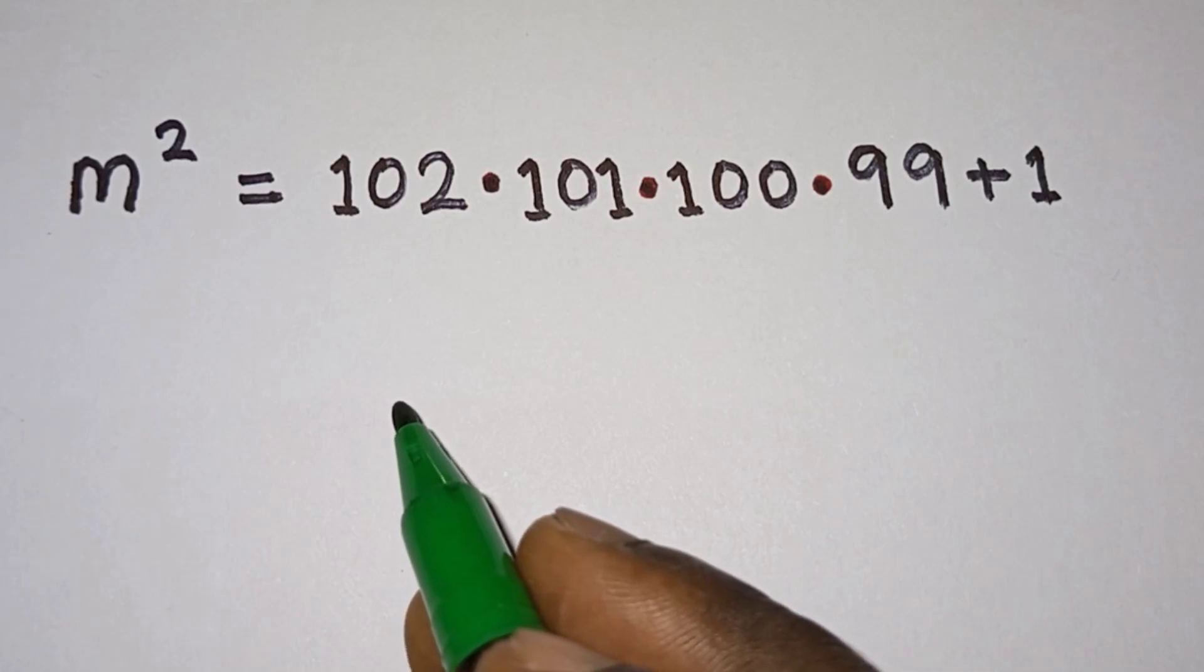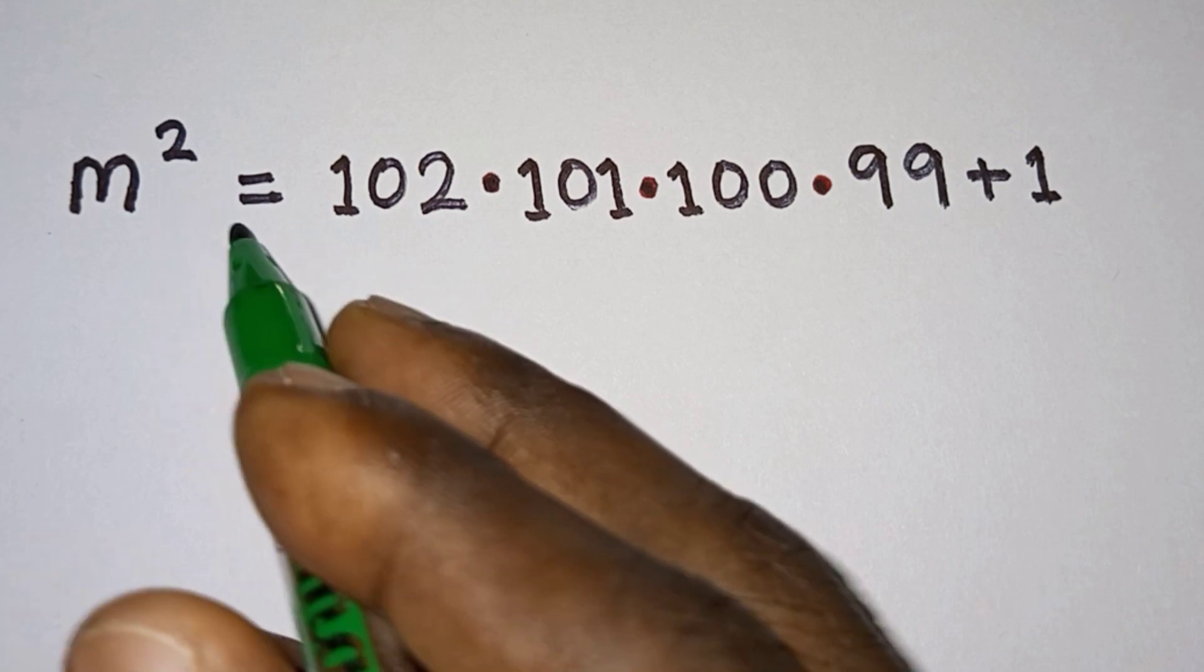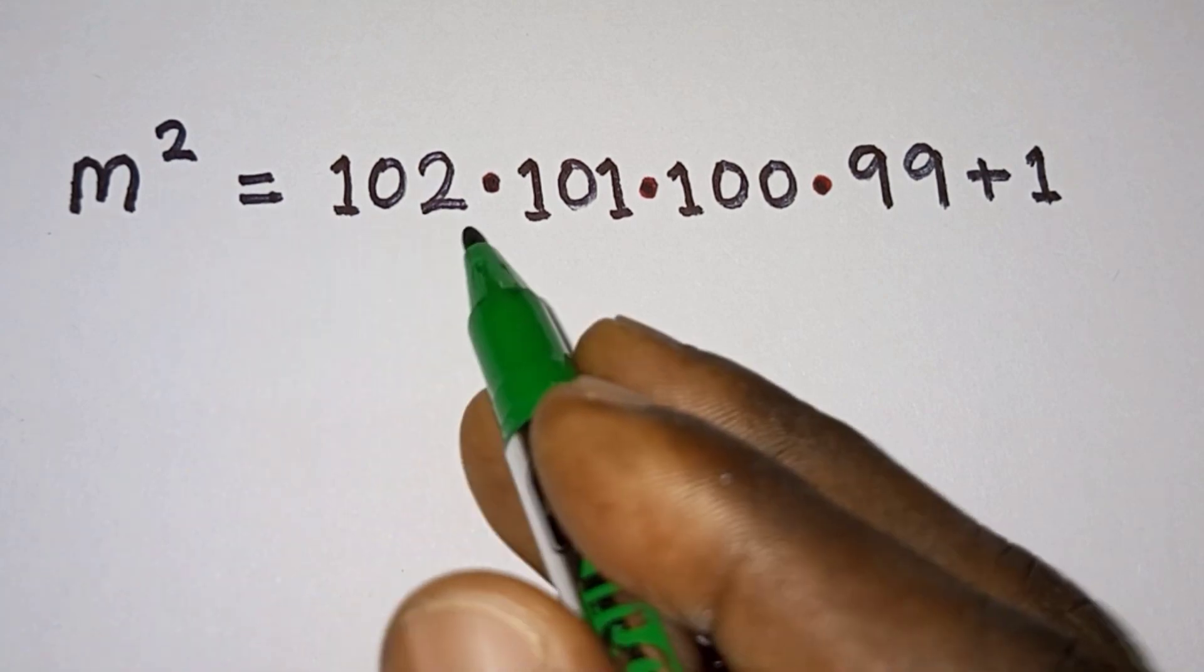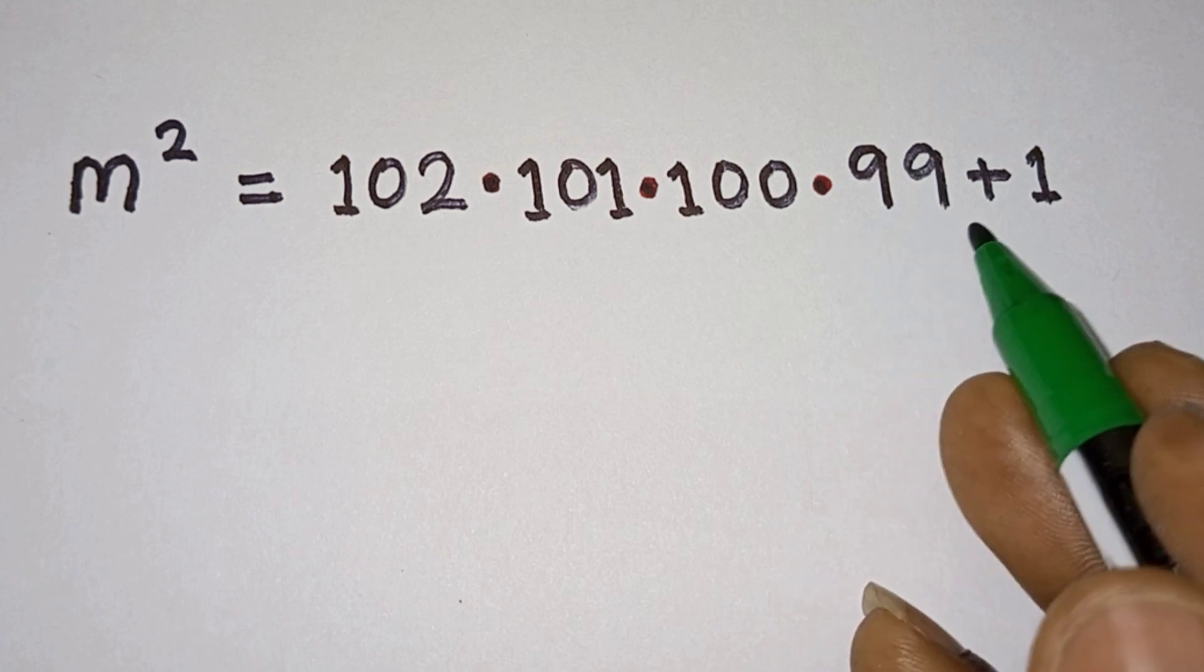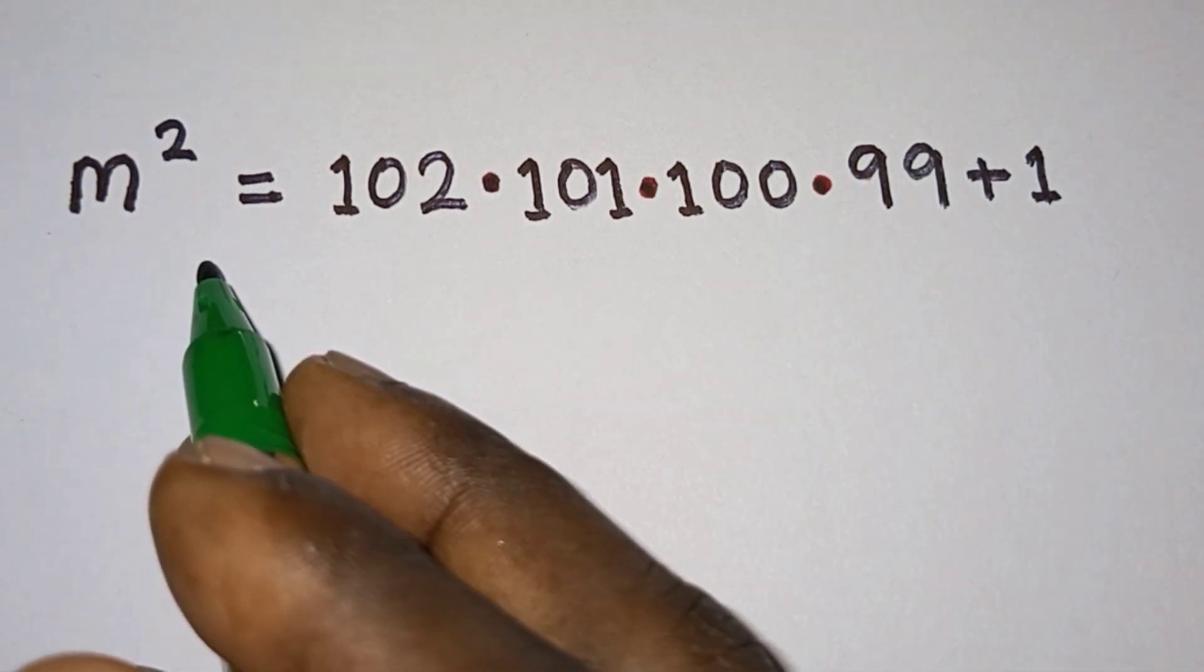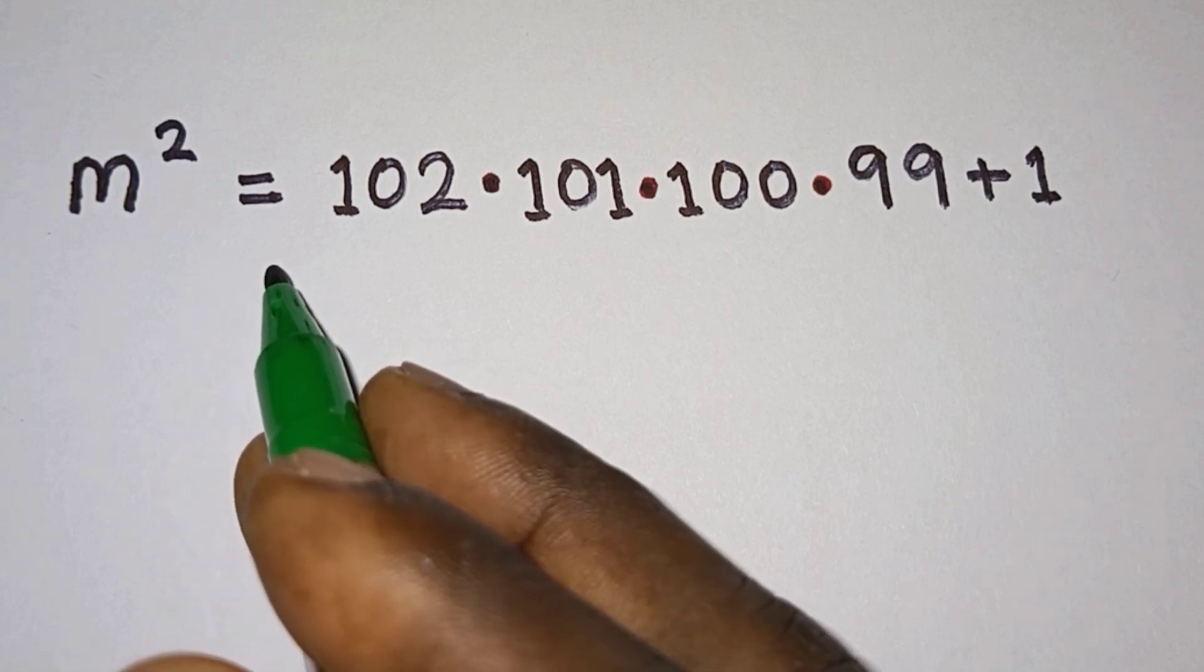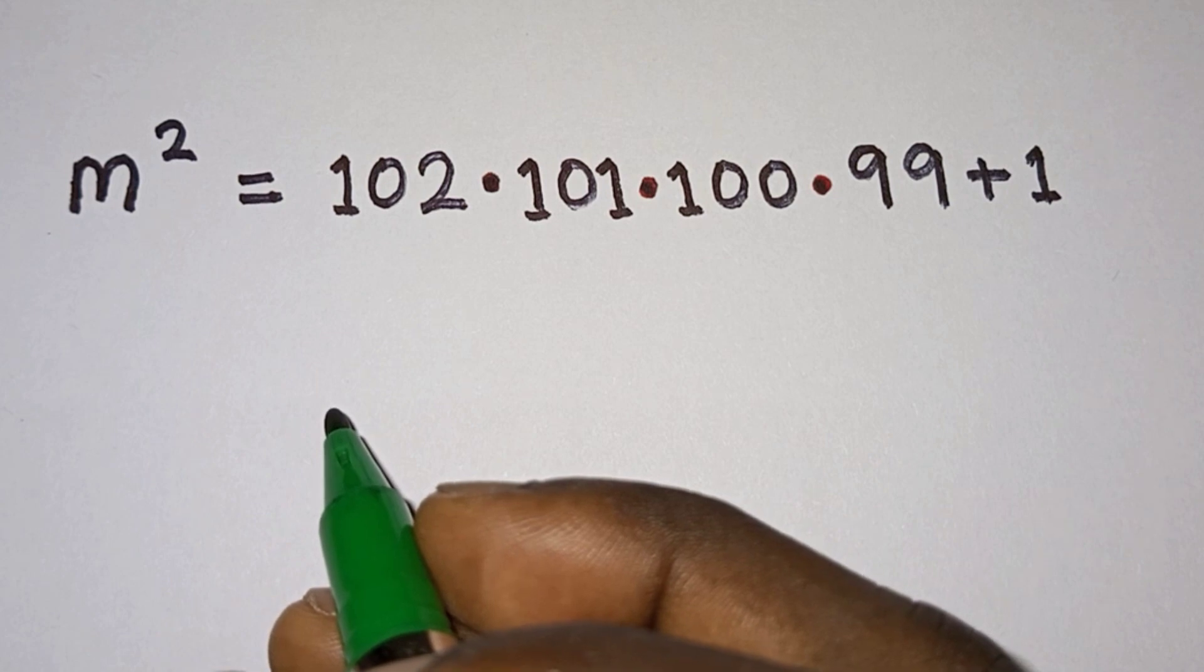Hello everyone, in this video we are given this interesting problem: m² = 102·101·100·99 + 1, and we have to find the value of m without using any calculator. Before we begin, if you are new here, please subscribe to my channel. Now let's get started.